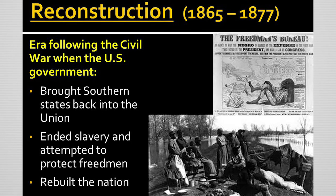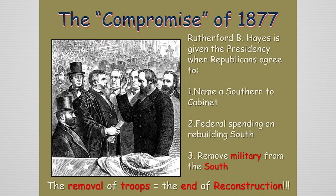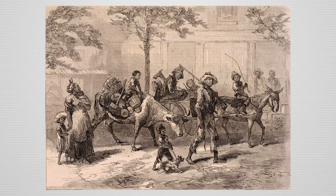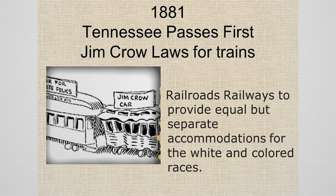In 1877, the era of Reconstruction ends. A deal is made with southern Democratic leaders which makes Rutherford B. Hayes president in exchange for the withdrawal of federal troops from the south, putting an end to efforts to protect the civil rights of African-Americans. In 1879, thousands of African-Americans migrate out of the south to escape oppression.